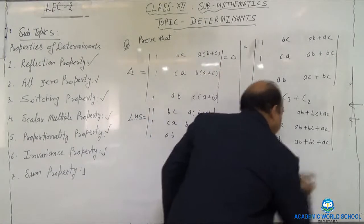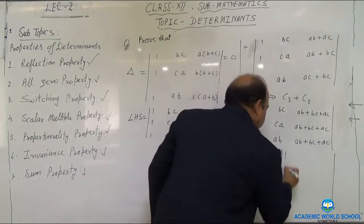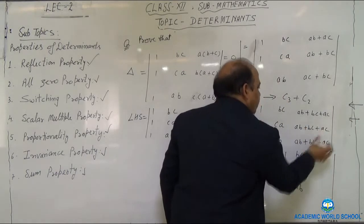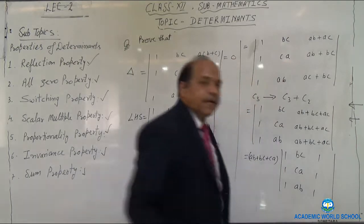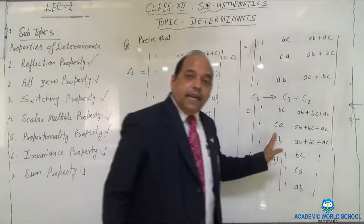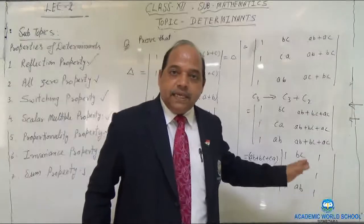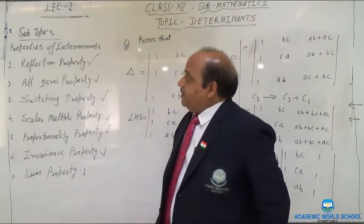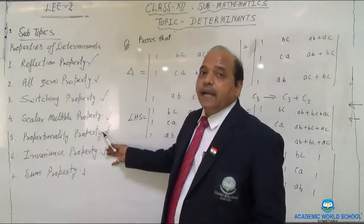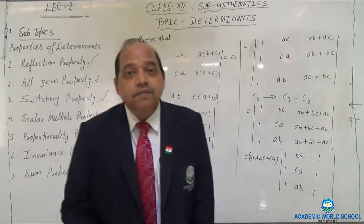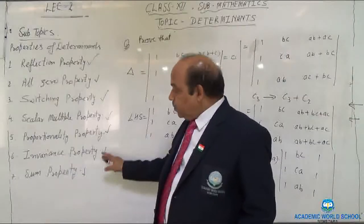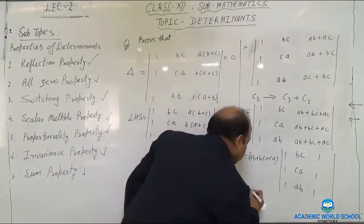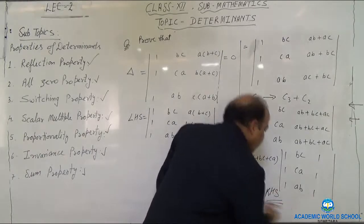After taking (ab+bc+ca) common, what remains in column three is 1, 1, 1 — which is identical to column one. When two columns are identical, the value of the determinant is zero. So the determinant equals (ab+bc+ca) times zero, which equals zero — and we have achieved the result using only properties.